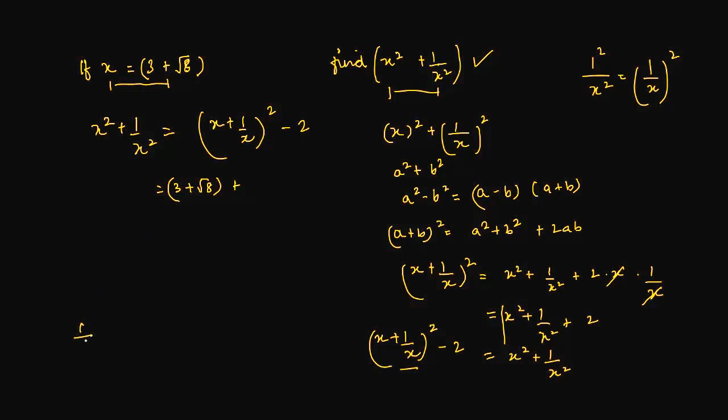So 1 upon x will be 1 upon 3 root 8. How do we remove the denominator? By multiplying it by, this is a plus b, so we multiply it by a minus b.